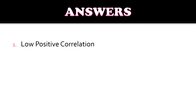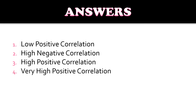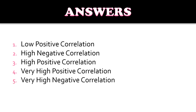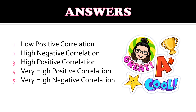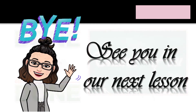Now let's check your answers. Number 1 is low positive correlation. Number 2 is high positive correlation. Number 3 is very high positive correlation. Number 4 is very high positive correlation. Number 5 is very high negative correlation. I hope you got all the correct answers and learned a lot today. We're done for today — thank you very much, and see you in our next lesson. Bye!